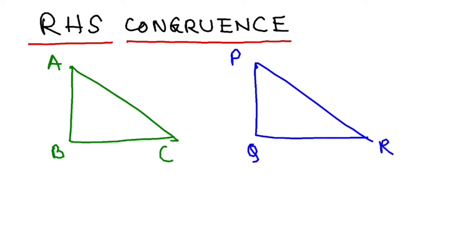And of course, these two angles are equal, so angle B is equal to angle Q. This is my first condition: angle B is equal to angle Q, that is the right angle. That is your R.